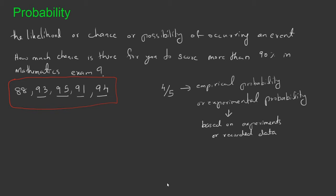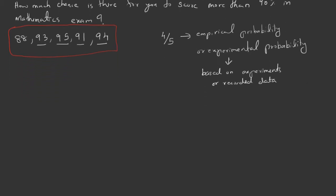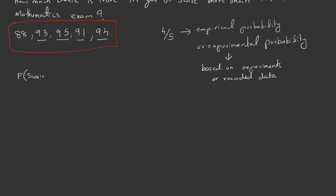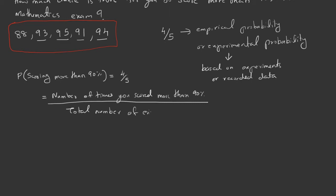Now we need to find a formula for this. In our example, the probability of scoring more than 90 percent equals 4/5. That equals the number of times you scored more than 90 percent divided by the total number of exams in the trial.